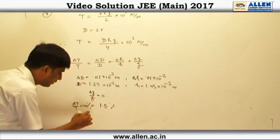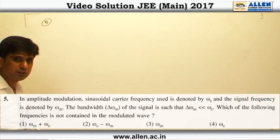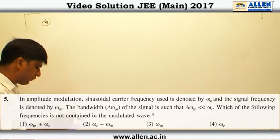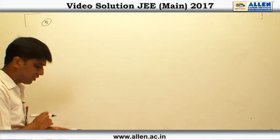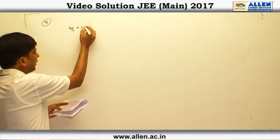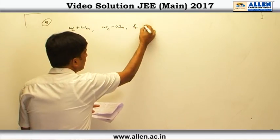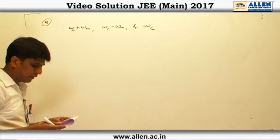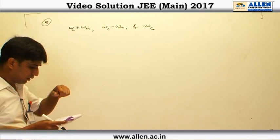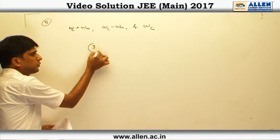The correct option is option number 4. This is a fact-based question from NCERT. It is given that the three frequencies contained by the modulated wave are omega c plus omega m, omega c minus omega m, and omega c. That means the frequency not contained in the modulated wave is omega m. Therefore, the correct answer is omega m and the correct option is option number 3.